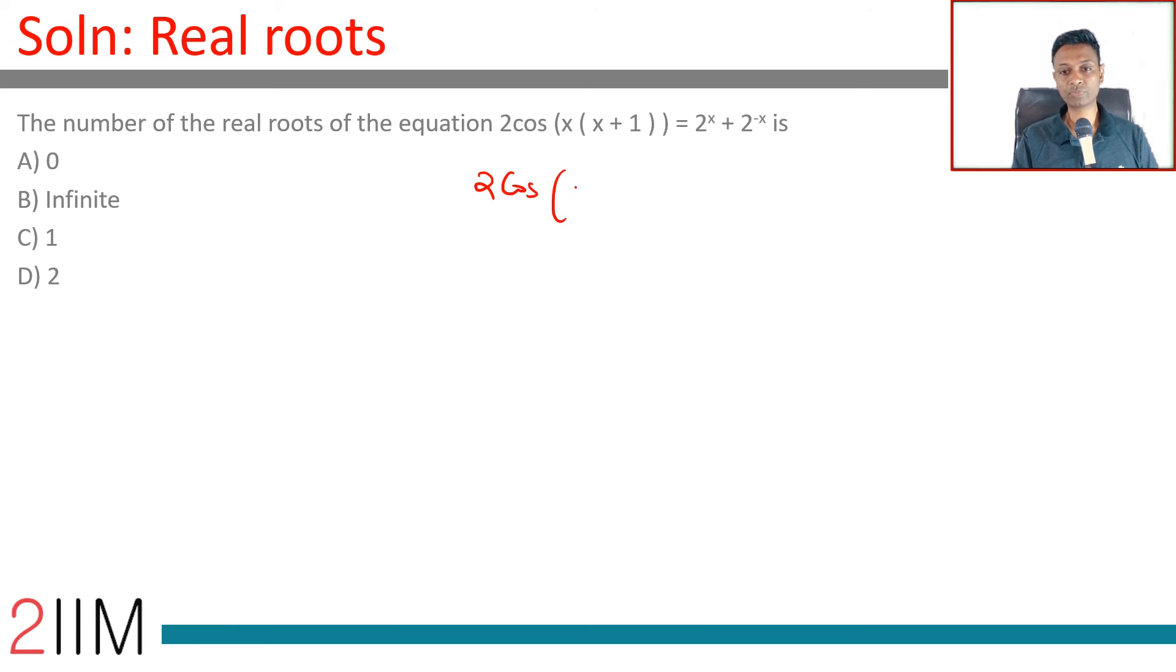That is 2 cos. 2 cos 0 into 0 plus 1 is 2 cos 0 which is 2 times 1 which is 2. Now,